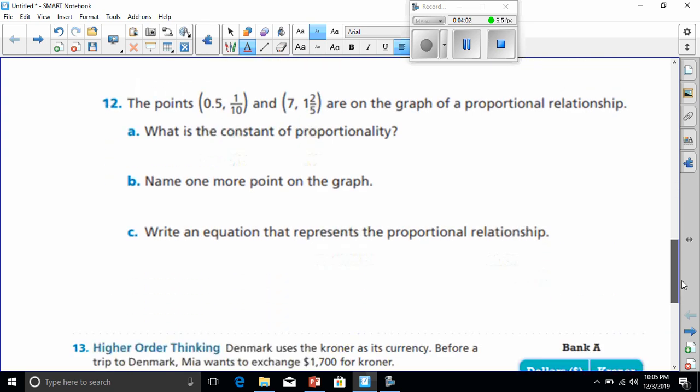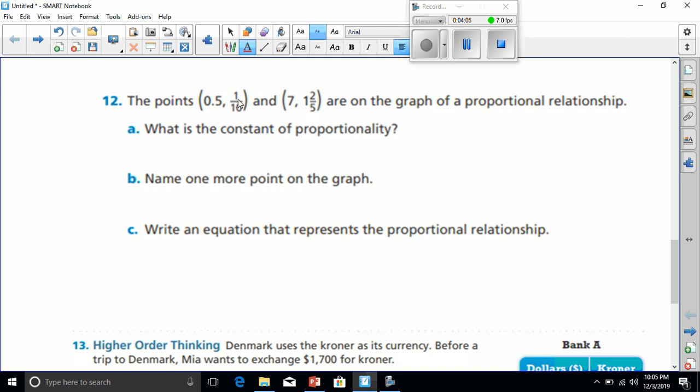Number 11 is yours to do, so that gives me number 12. The points (0.5, 1/10) and (7, 1 and 2/5) are on a graph of a proportional relationship. That means we automatically know, because they told us, that the graph does go through the origin and it is going to be straight. What is the constant of proportionality? Well, let's go ahead and graph this. If we had 0.5 and 1 over 10, we realize that we're always putting y over x, and this is in the form of x, y.